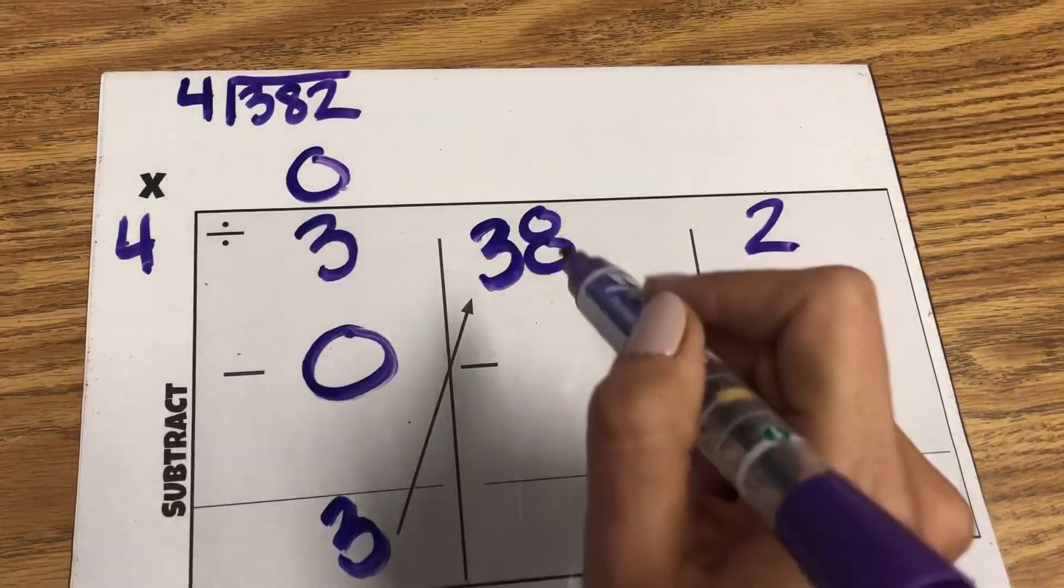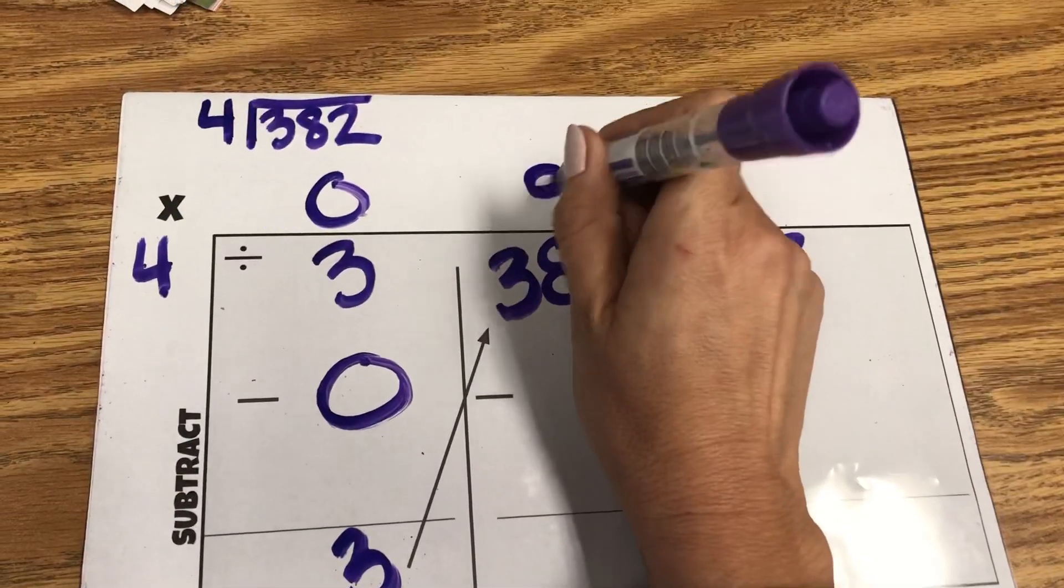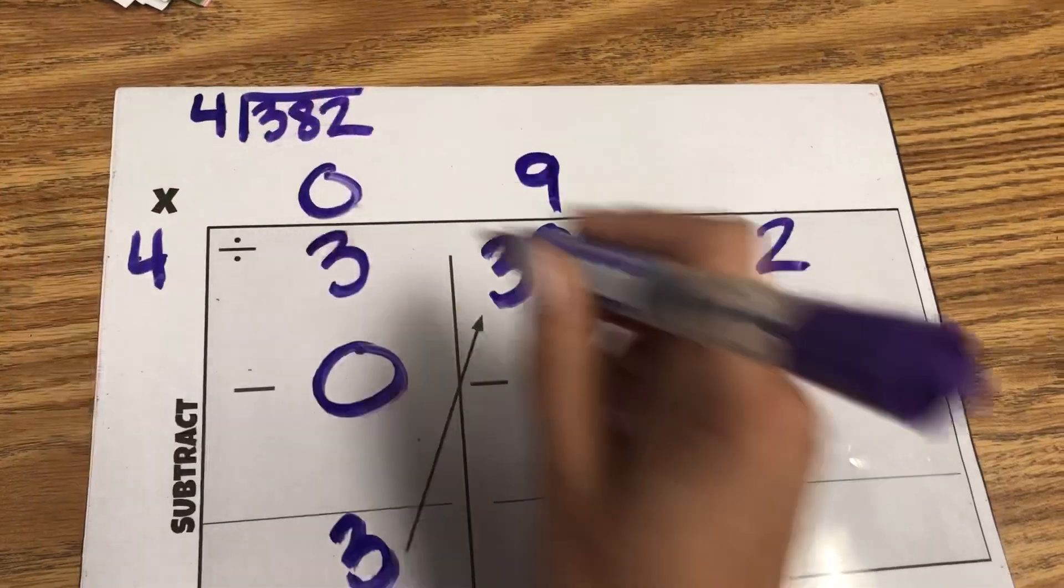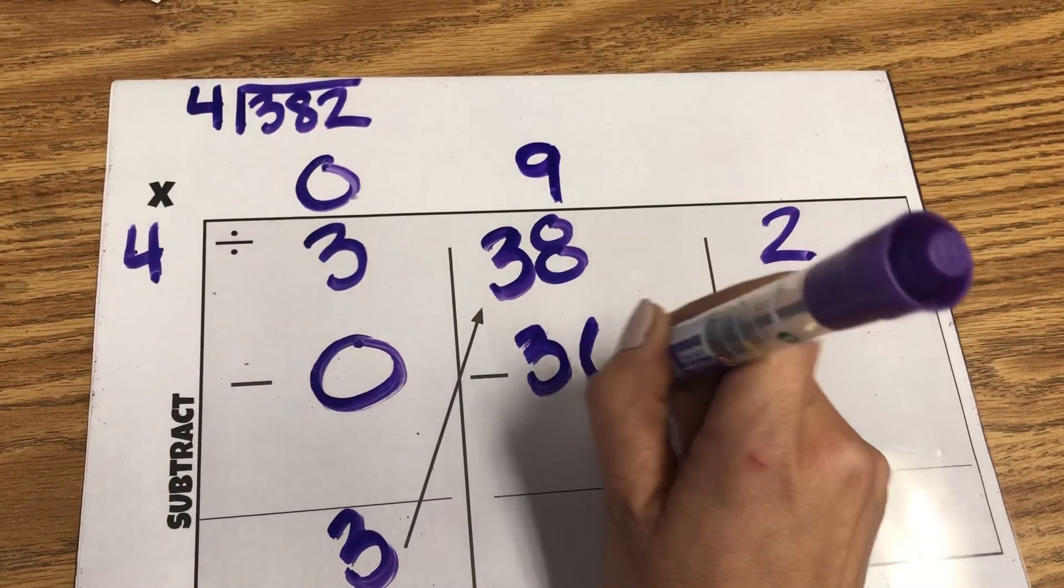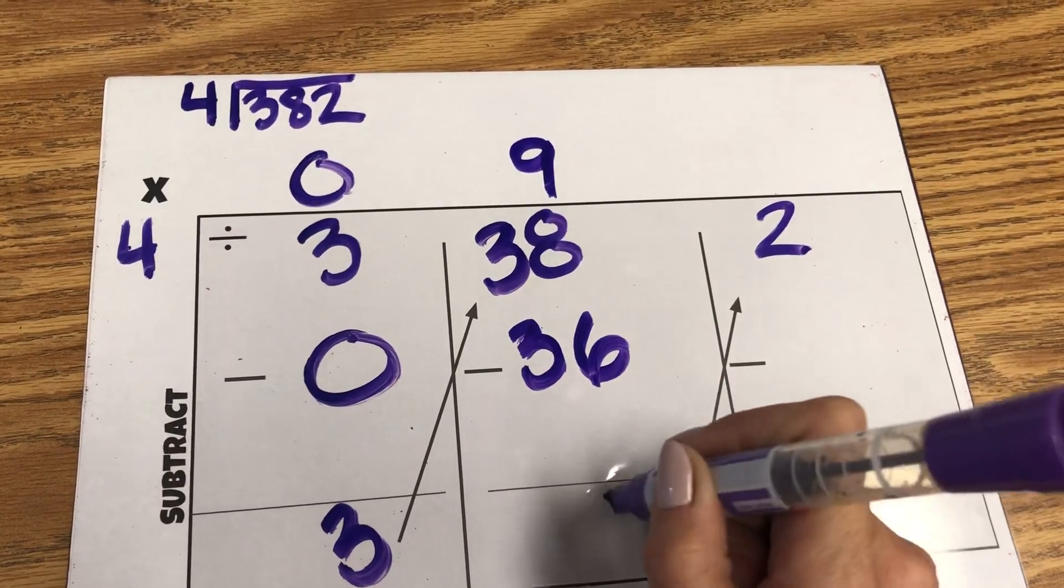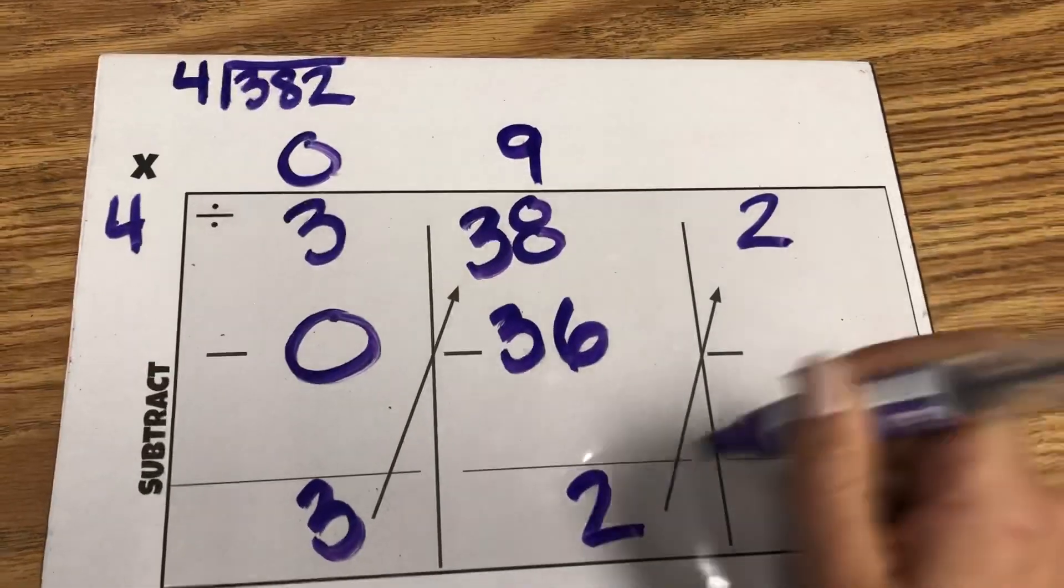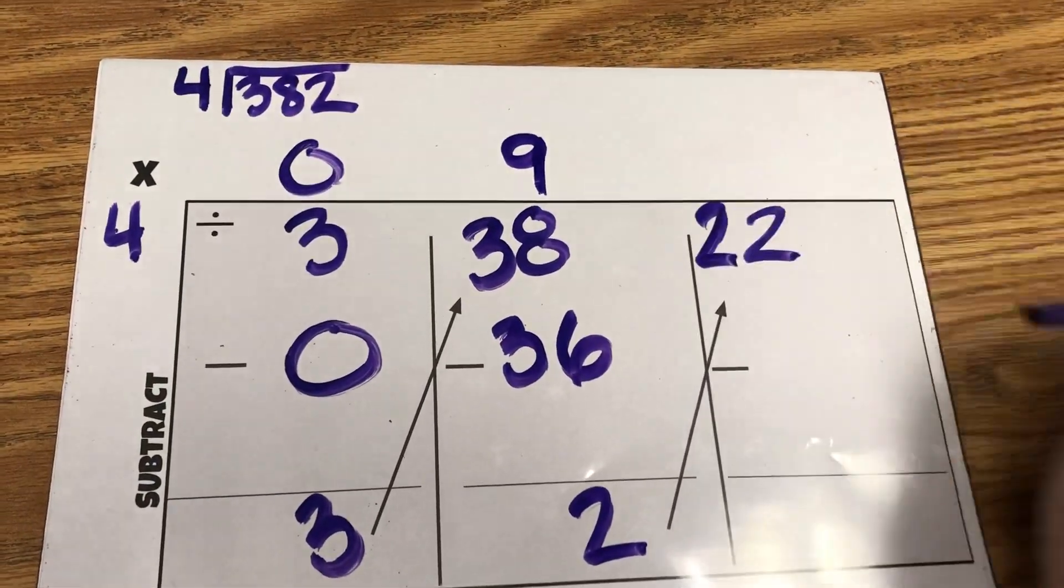Now 4 into 38 goes 9 times. 9 times 4 is 36. They subtract again. That's 2. They bring this number and they put that up there.